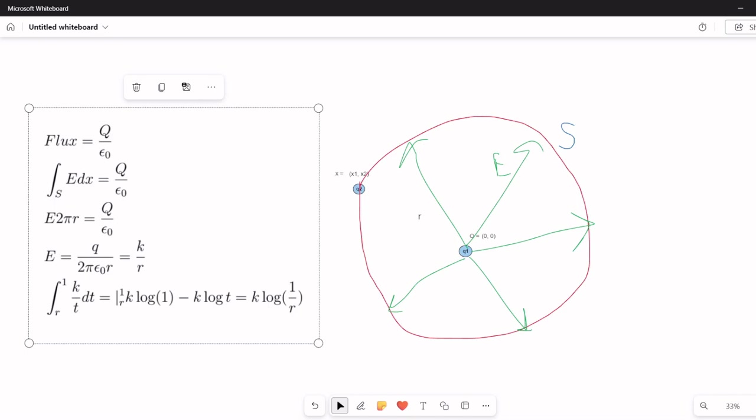But since all the field lines must be the same, the flux is also equal to the integral of a constant E across the boundary. So E times 2πR equals Q over epsilon naught, or E equals K over R, where K is a constant combining all the other constants.